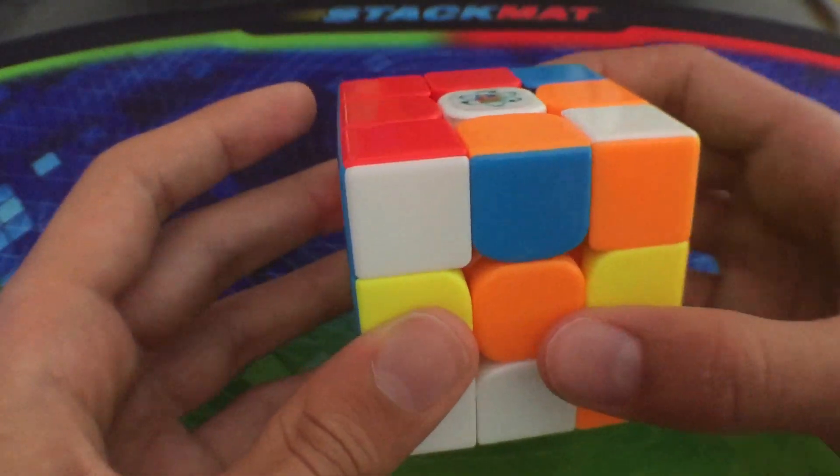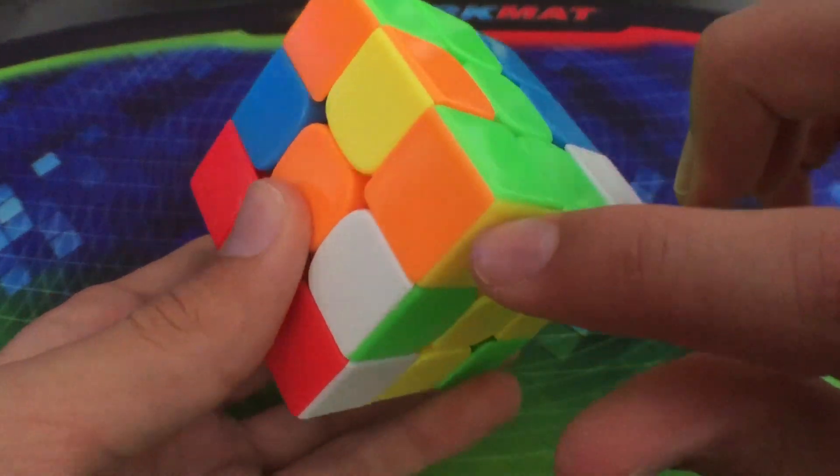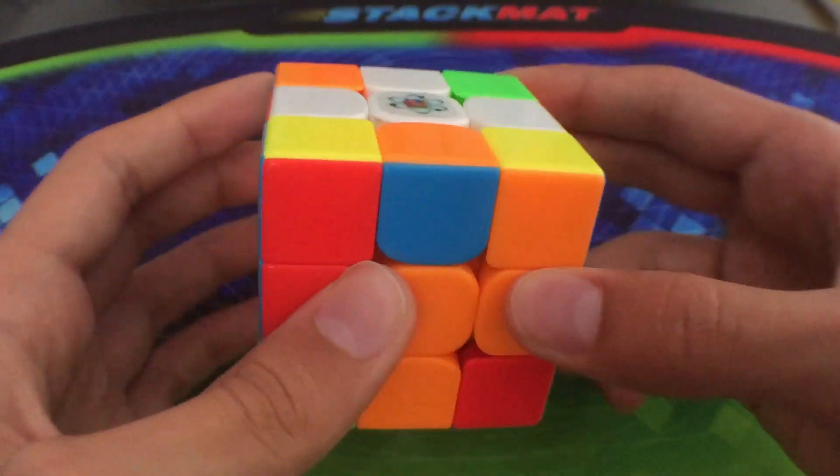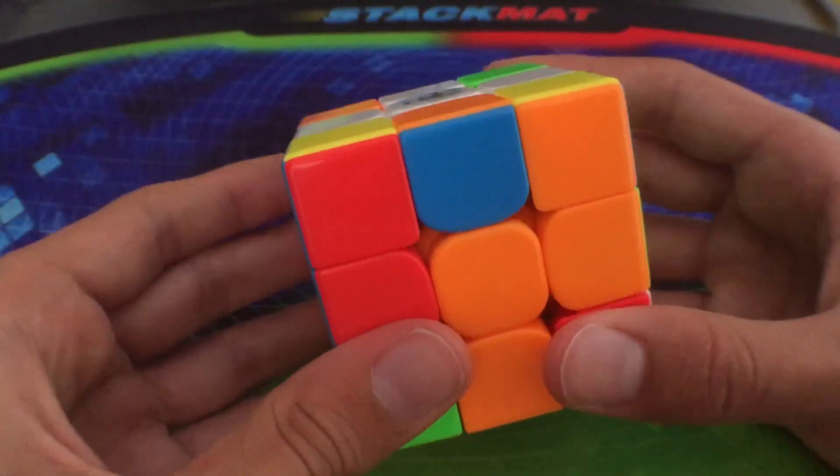So I start off with an L to move it down, and then a B to insert that, and then I just did a simple D and then inserted it and then D prime. So now we have the cross in five moves, and as you can see this pair was preserved the entire time.